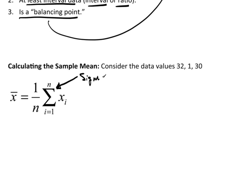So what this is actually saying is take data value x1 plus data value x2 plus all the way out to data value xn and divide it by n.